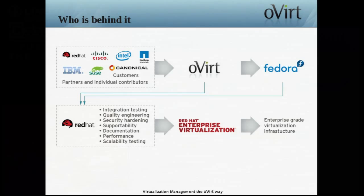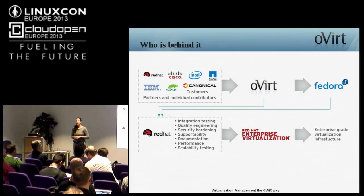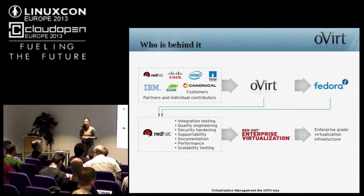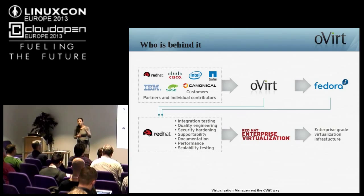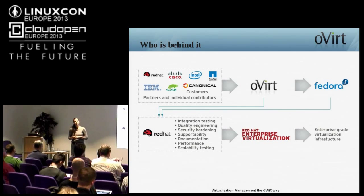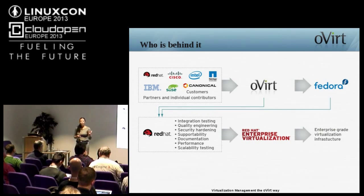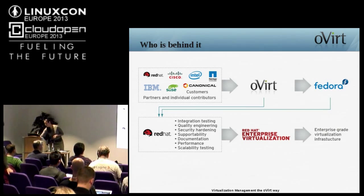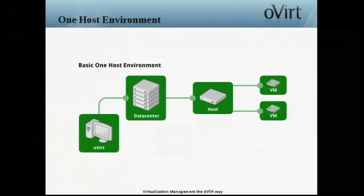Who is behind it? We have all the big companies as part of our governance. oVirt is supported by IBM, Red Hat, Intel, NetApp, and others. oVirt is by default packaged for Fedora and Linux CentOS, but there is community work currently to package it for Gentoo, Ubuntu, and Debian — you can choose your flavor of Linux and check the website. One last note: Red Hat Enterprise Virtualization product is derived from the oVirt project.